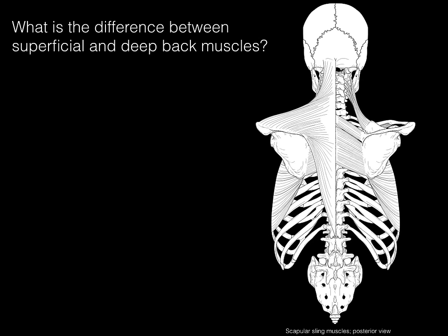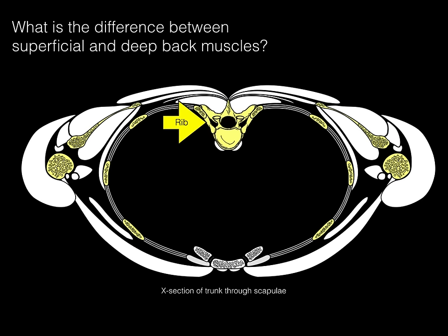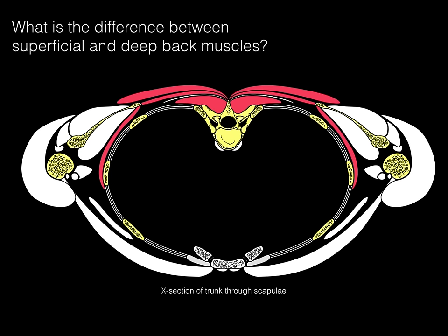Before we begin, what is the difference between superficial and deep back muscles? To answer this, let's take a cross-section through the shoulder blades. In yellow are the bones — a cross-section through the head of the humerus, the scapula, a thoracic vertebra articulating with the rib. In red are all the muscles that make up the back, but these back muscles are actually two different layers. One layer, shown in pink, is superficial, and they attach primarily from the trunk to the upper limb, like the scapula and humerus. Their function is to support and move the upper limb — they're actually upper limb muscles that migrated to the back.